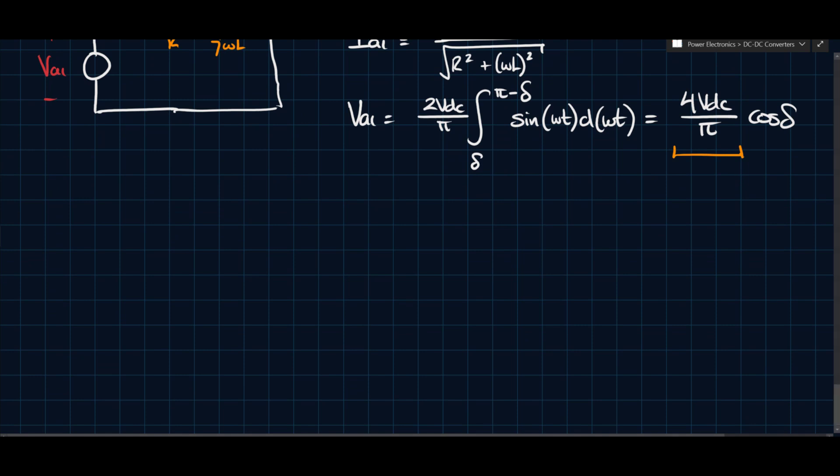We can say that P is equal to IA1RMS times VA1RMS, and then we can say this is cos theta. So this is the power factor, cos theta.